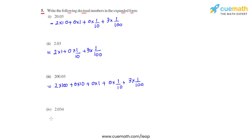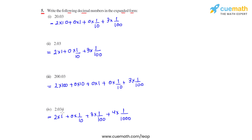Coming to the last part, the fourth number, we write it as 2 times 1 because 2 is at ones place, plus 0 times 1 over 10 because 0 is at tenths place after the decimal, plus 3 times 1 over 100 because 3 is at hundredths place, plus 4 times 1 over 1000 because 4 is at thousandths place after the decimal. This is how we write the expanded forms of the given decimal numbers.